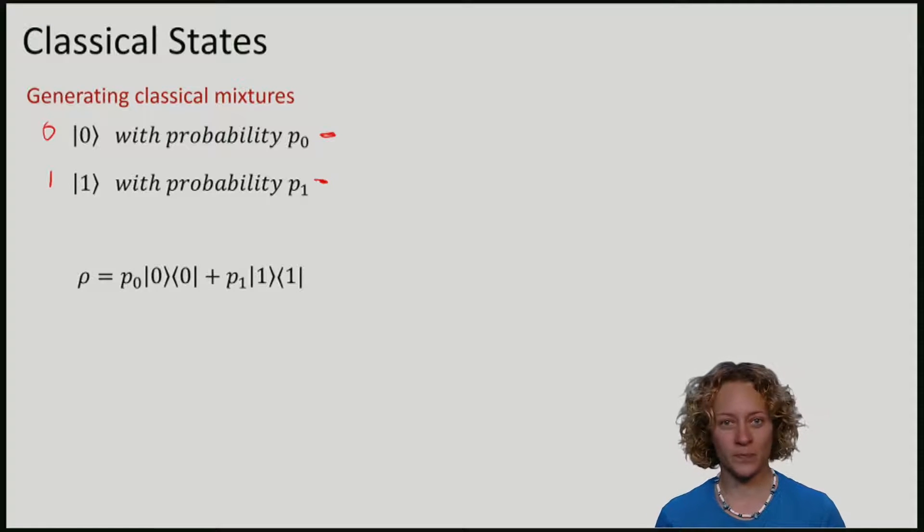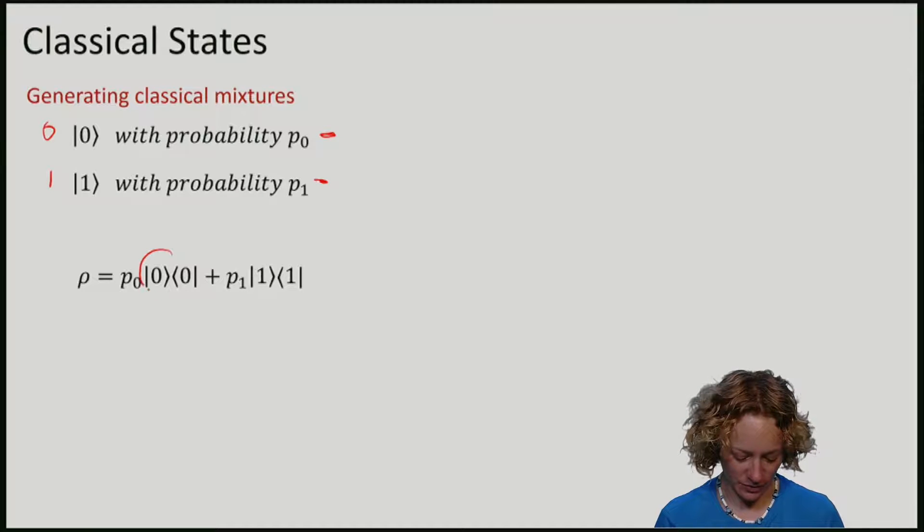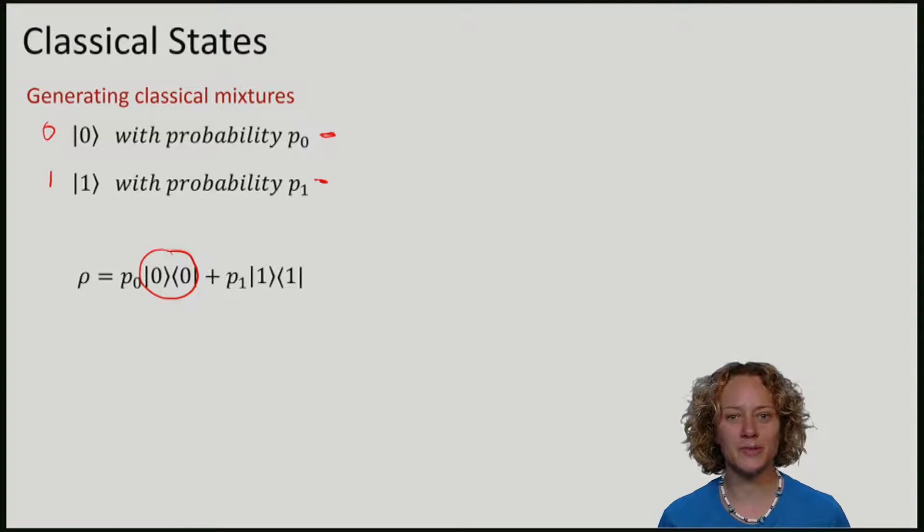It looks like this: P0 times the density matrix for 0, and P1 times the density matrix for 1.